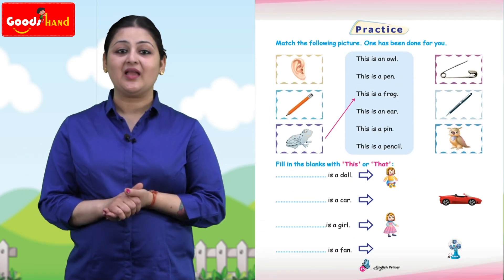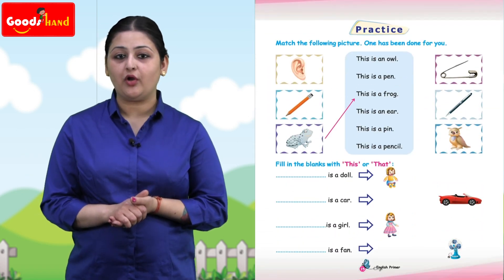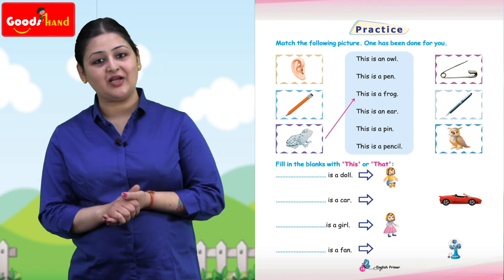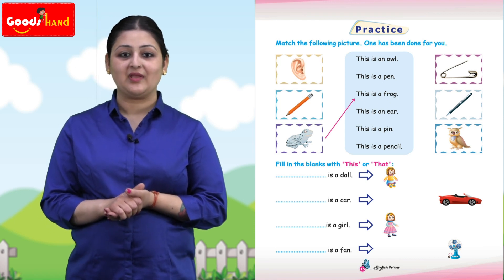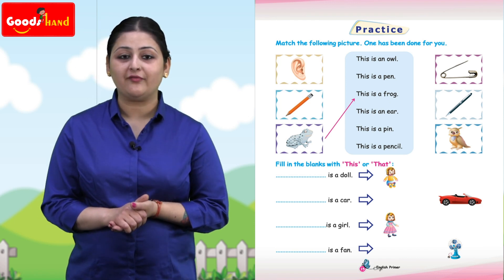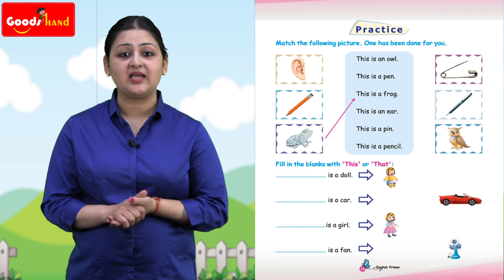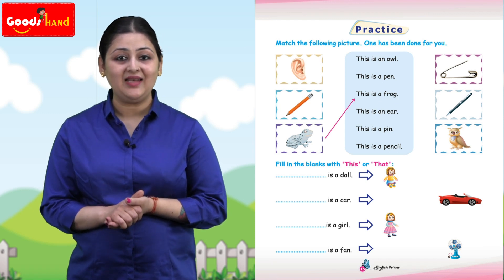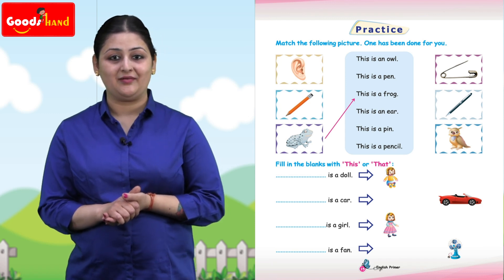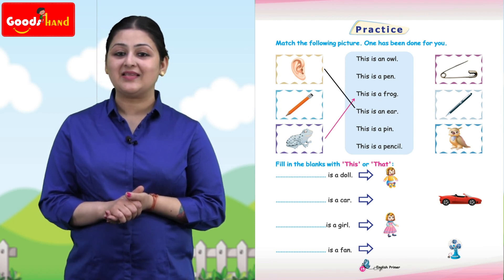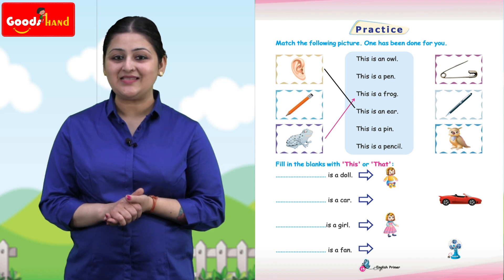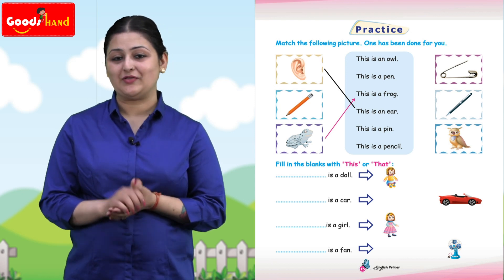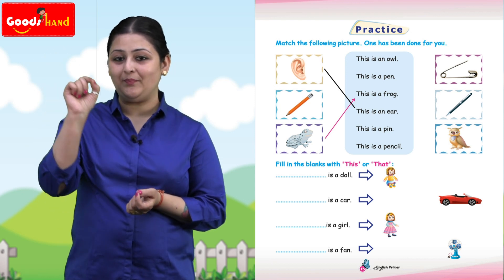Practice time — match the following picture; one has been done for you. The first one is ear: this is an ear. The second one is pin: this is a pin, so match it with a pin.